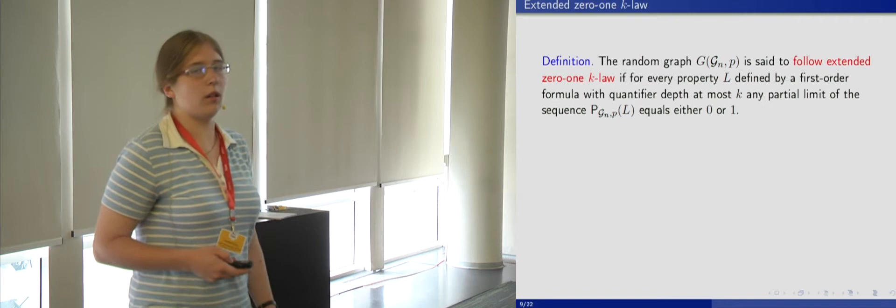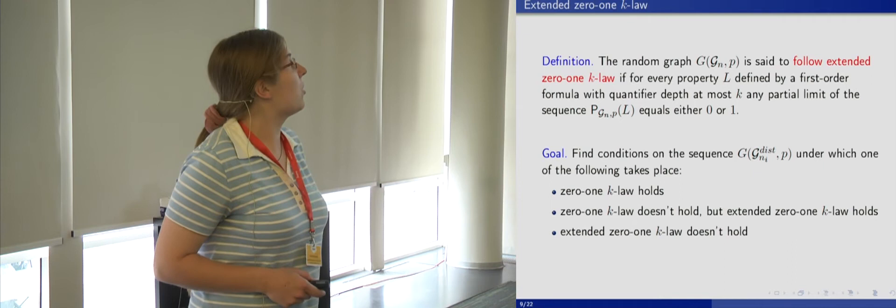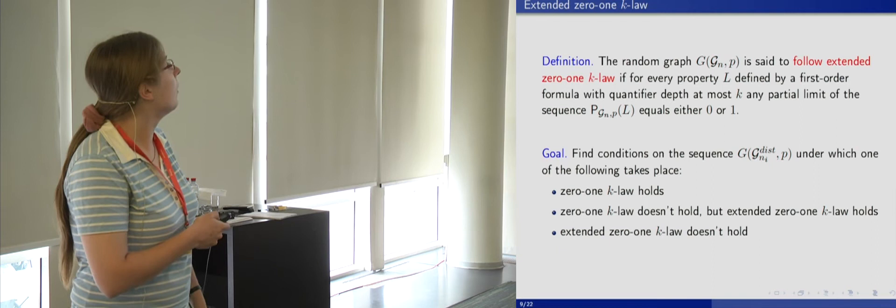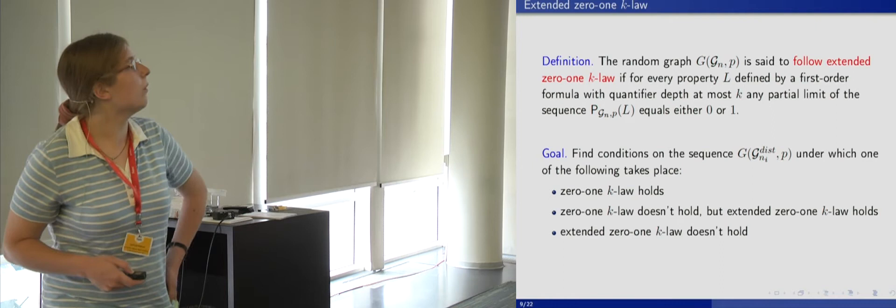The second question is equivalent to asking whether G(G_N, P) follows the extended 0,1 law. Our goal is to find conditions on the sequence G(G_{N_I}, P) under which one of the following takes place: first, 0,1 K law holds; second, 0,1 K law does not hold but extended 0,1 K law holds; and third, extended 0,1 K law does not hold.